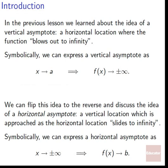In the previous lesson, we learned about the idea of a vertical asymptote — a horizontal location where the function blows out to infinity, either up or down. Symbolically, we can express this as: as x approaches some value a, some horizontal location a, f of x goes to positive or negative infinity.